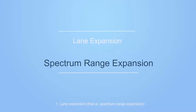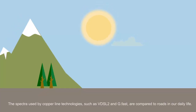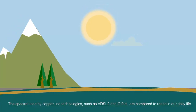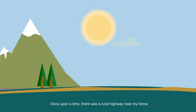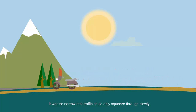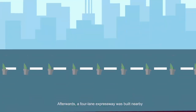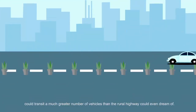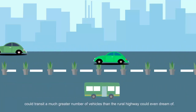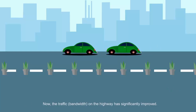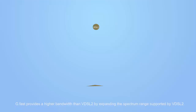Factor 1: Lane Expansion, that is, Spectrum Range Expansion. The spectra used by copper line technologies such as VDSL2 and G.Fast are compared to roads in our daily life. Once upon a time, there was a rural highway near my home — so narrow that traffic could only squeeze through slowly. Afterwards, a 4-lane expressway was built nearby, which could transit a much greater number of vehicles. G.Fast provides higher bandwidth than VDSL2 by expanding the spectrum range supported by VDSL2.